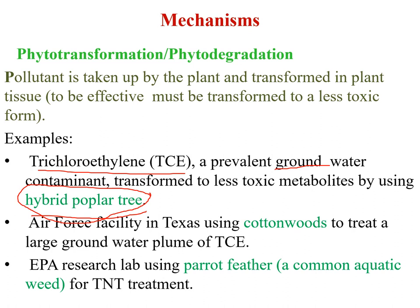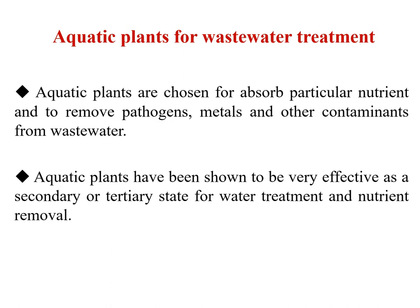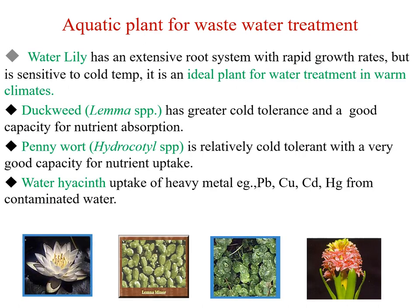The cottonwood plant is used in Texas to treat groundwater plumes of TCE. The EPA's environmental protection research lab uses parrot feather, a common aquatic plant, for TNT (trinitrotoluene) treatment. Some aquatic plants can also be used for wastewater treatment — chosen on the basis of their absorption of particular nutrients and ability to remove pathogens, metals, and other contaminants from wastewater. Water lily is an ideal plant for water treatment in warm conditions due to its extensive root system and rapid growth rate.